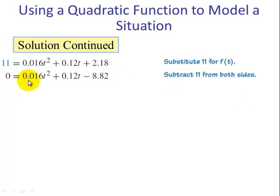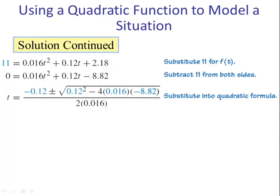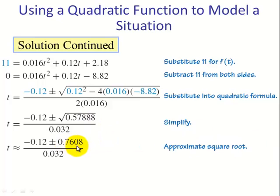Now this is in standard form. This is a, this is b, this is c. Using the quadratic formula, we have t = (-0.12 ± √0.57888) / 0.032. The square root of 0.57888 is 0.7608. Approximating, we have t ≈ -27.53 or t ≈ 20.03.